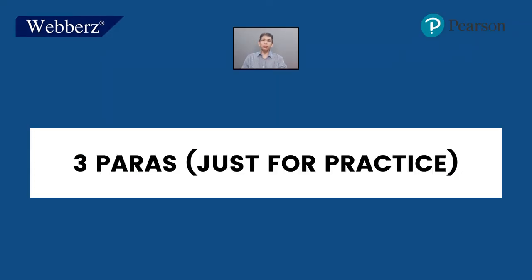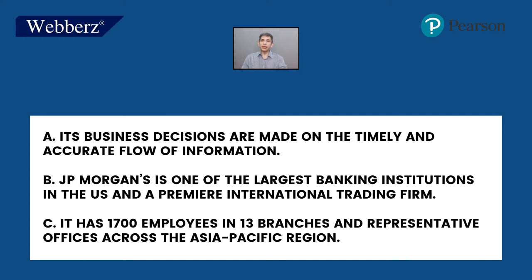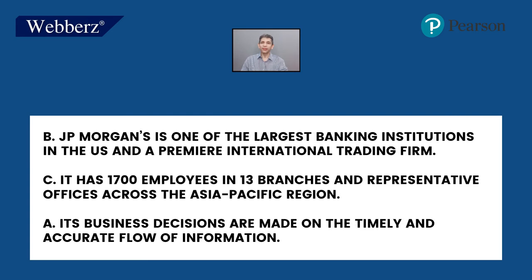Three paragraphs now — this is just to build a building block. Let me read them first. Para A says: its business decisions are made on the timely and accurate flow of information. Para B says: JP Morgan is one of the largest banking institutions in the US and a premier international trading firm. Para C says: it has 1,700 employees in 13 branches and representative offices across the Asia-Pacific region. Re-order and re-arrange them. The sequence is B, C, and A.